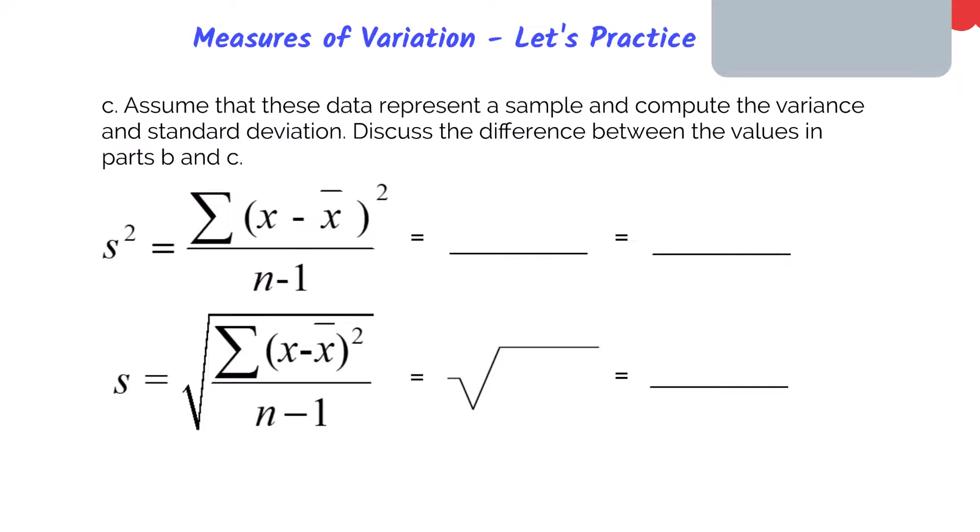Imagine we took a sample, but we're using the same data points from before. We have the same 18.833 that we calculated before. Since it's no longer a population, the denominator will be the sample size of 6 minus 1. If we divide these two numbers, we get a sample variance of 3.7667. So to get the sample standard deviation, we'll take my sample variance and take the square root of it, and we get 1.9408.